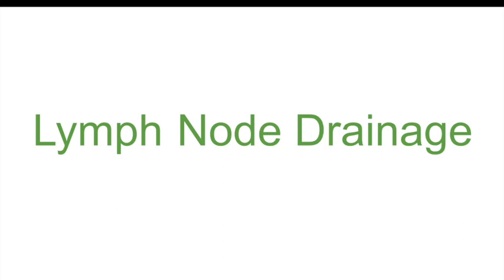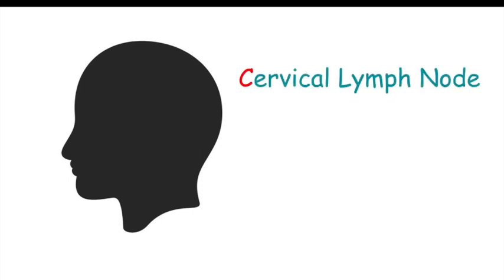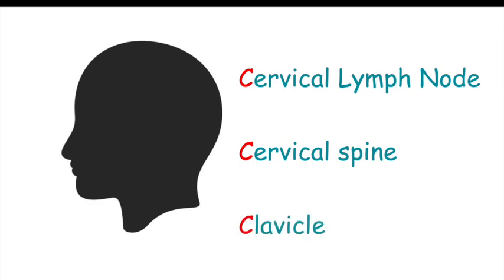The head and neck drain into the cervical lymph nodes. We can remember this by saying that anything above the cervical spine drains into the cervical lymph node. Another way to think of this is that anything above the clavicle drains into the cervical lymph node. Choose whichever one is easier for you to remember.